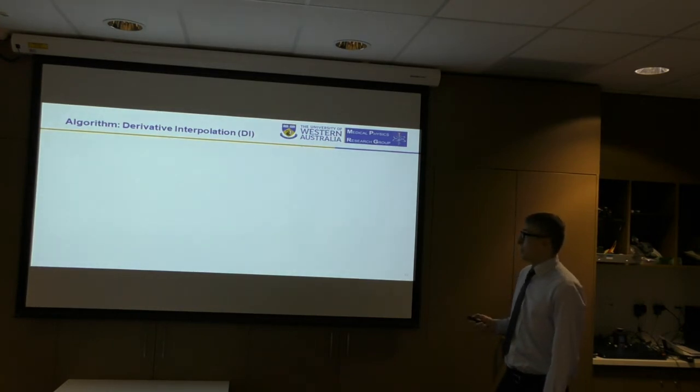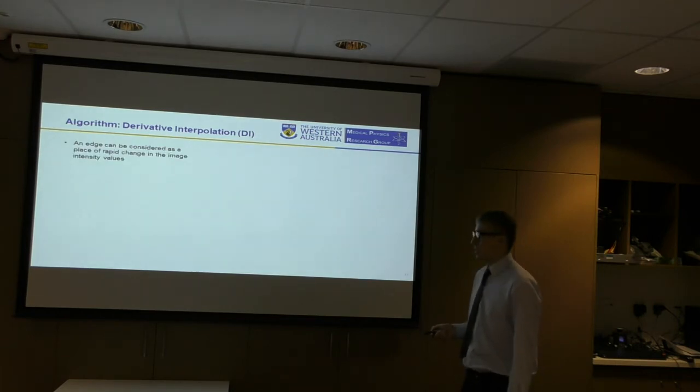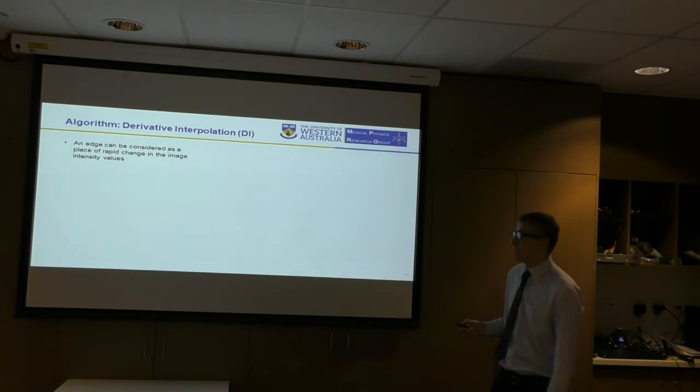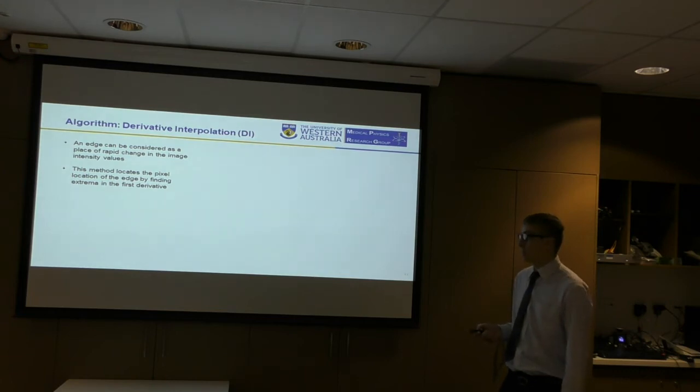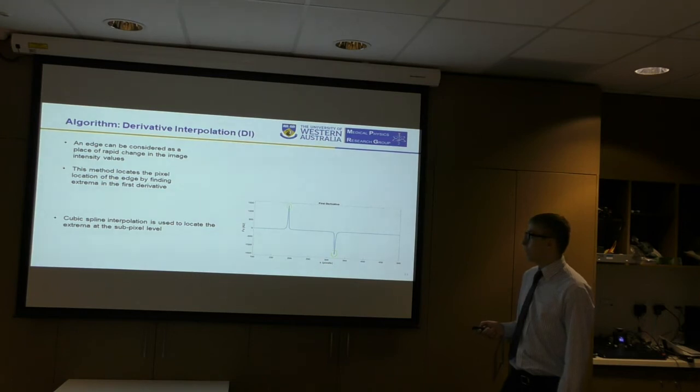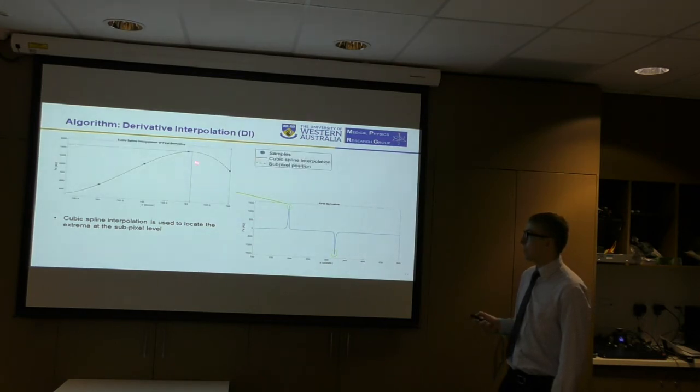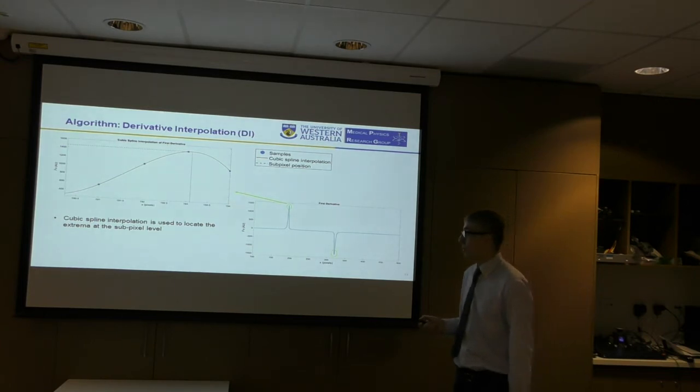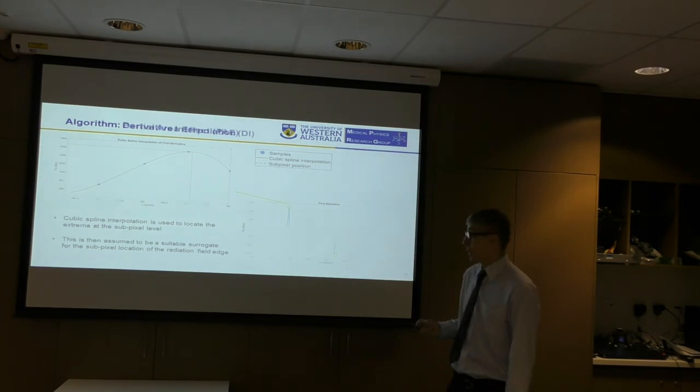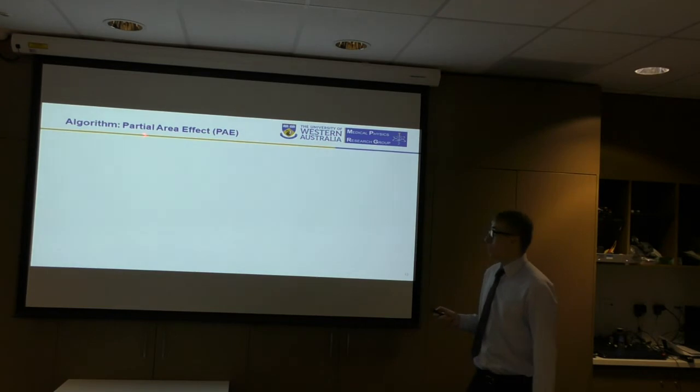This algorithm which I wrote is called derivative interpolation. It works on the same extracted average profiles spanning the region of interest, and it's a computer vision based technique. An edge can be considered as a place of rapid change in the image intensity values. This method locates the location of the edge by finding extrema in the first derivative, first at the coarse pixel level, and then once again it's using cubic spline interpolation, but this time to find the extrema in the derivative to get the sub-pixel location of that, and this is assumed to be a suitable surrogate for the location of the radiation field edge.